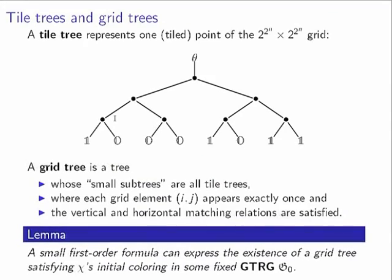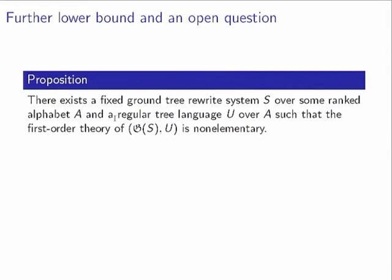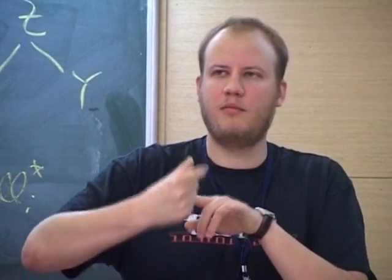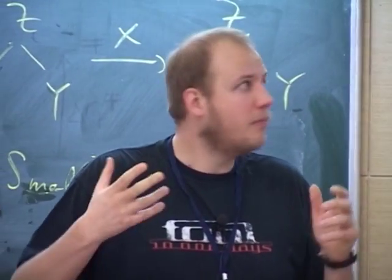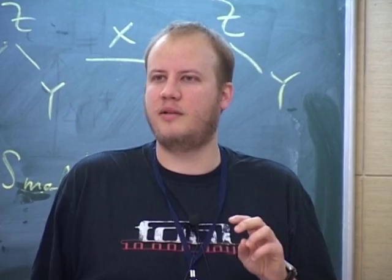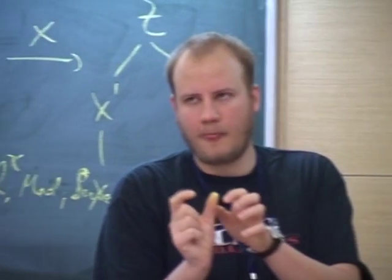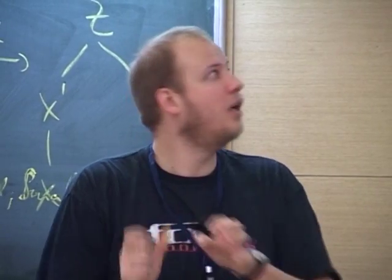I would like to conclude with one further lower bound. If you consider a fixed ground tree rewrite graph with a unary predicate given by a regular tree language, then the first-order theory is non-elementary. There is already a fixed ground tree rewrite system with a fixed regular language such that the first-order theory is non-elementary. The intuition is that this fixed regular tree language can simulate the computation of a bottom-up tree automaton, allowing reduction from the satisfiability problem over finite words for first-order logic.